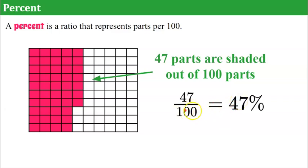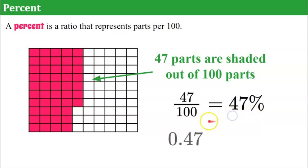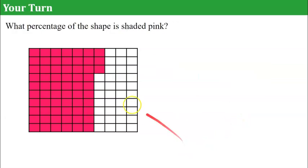Sometimes my students say this percent symbol, whoever made that, used the 100 to make it — here's the 1 and the two zeros. So they write 47 and to replace the denominator of 100, they make the percent symbol. 0.47 is how you write 47 one-hundredths as a decimal, which is equivalent to 47%.